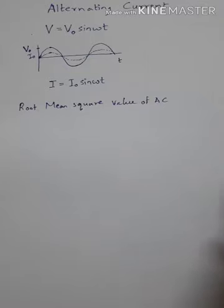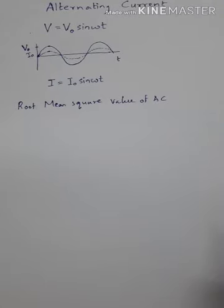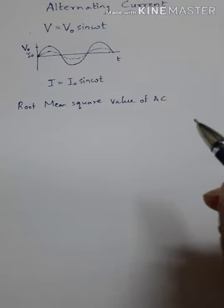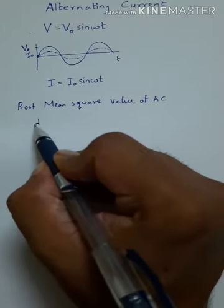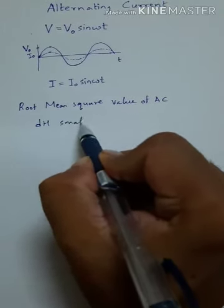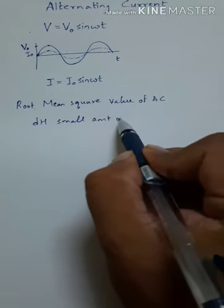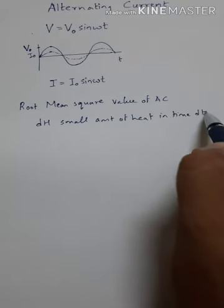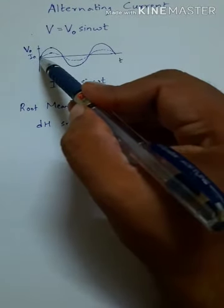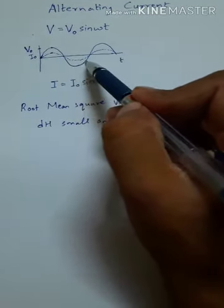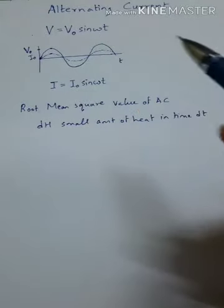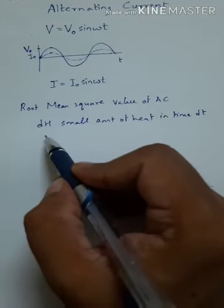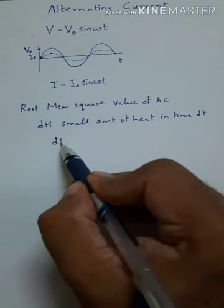Let us think that there is a resistor through which current is passing, and therefore heat will be generated in this resistor. Let dH be the small amount of heat generated in time dt. Now I want the heat over one cycle — from here to here, this is one cycle — so I want to find out the heat in one cycle, and to do that I have to integrate.